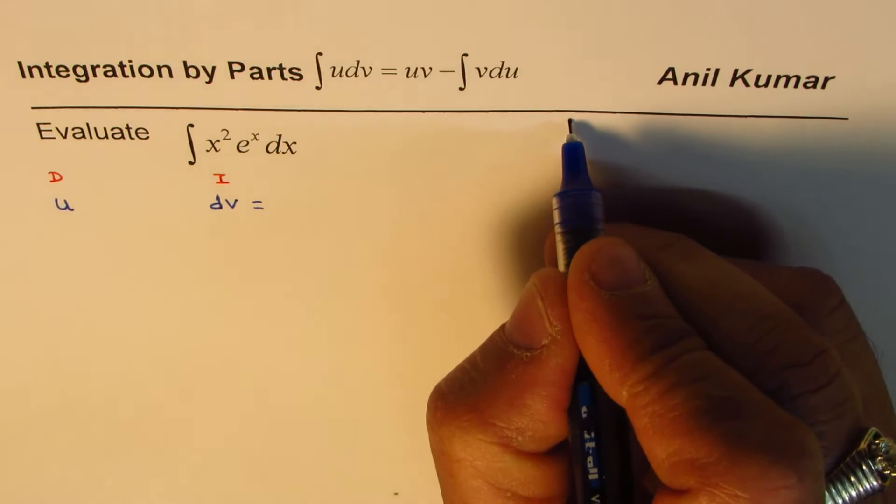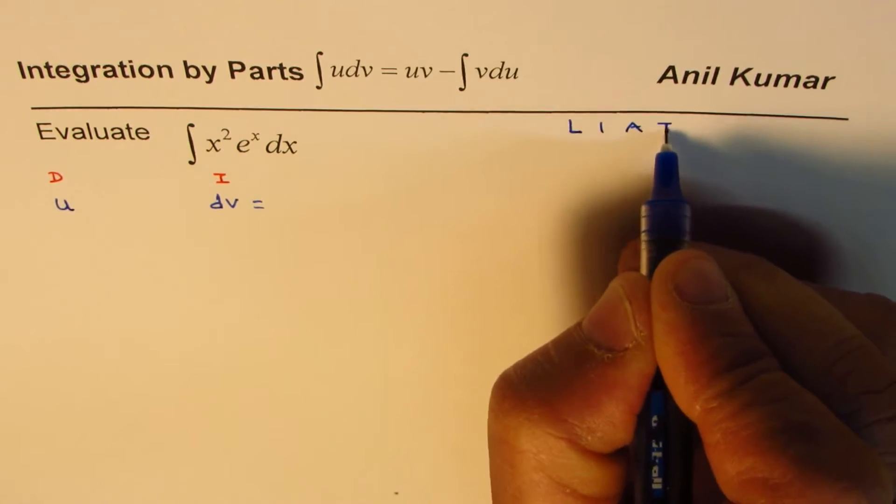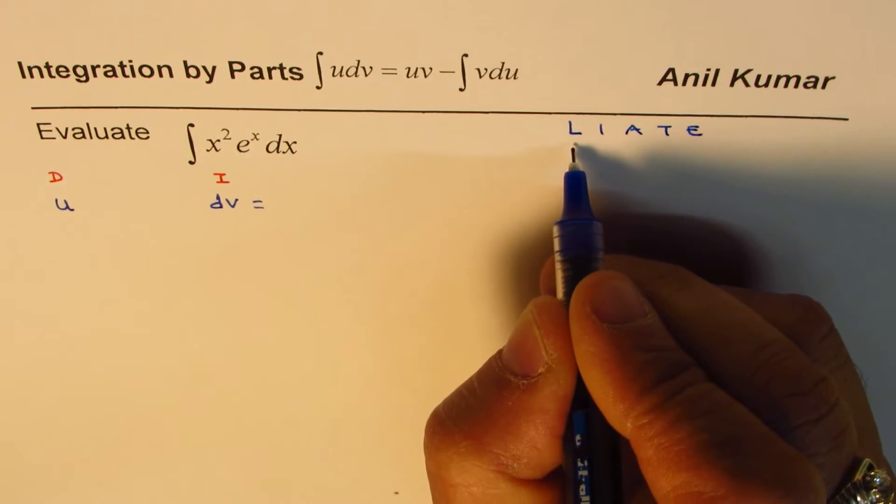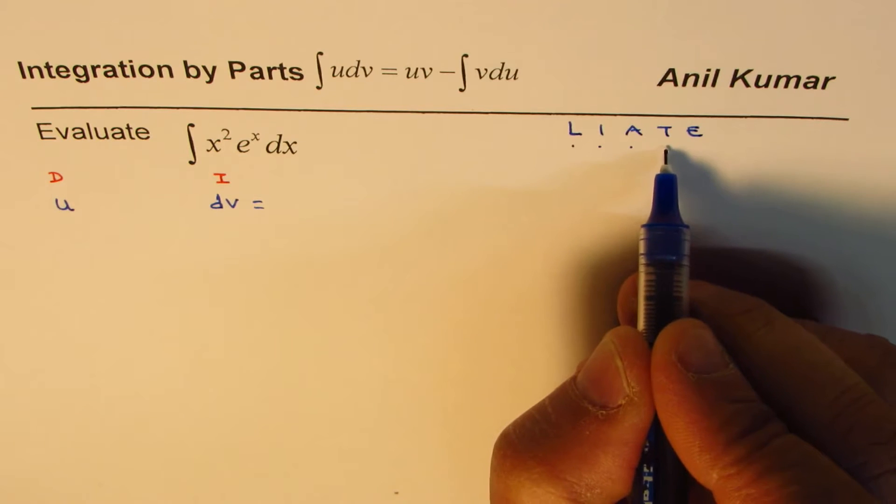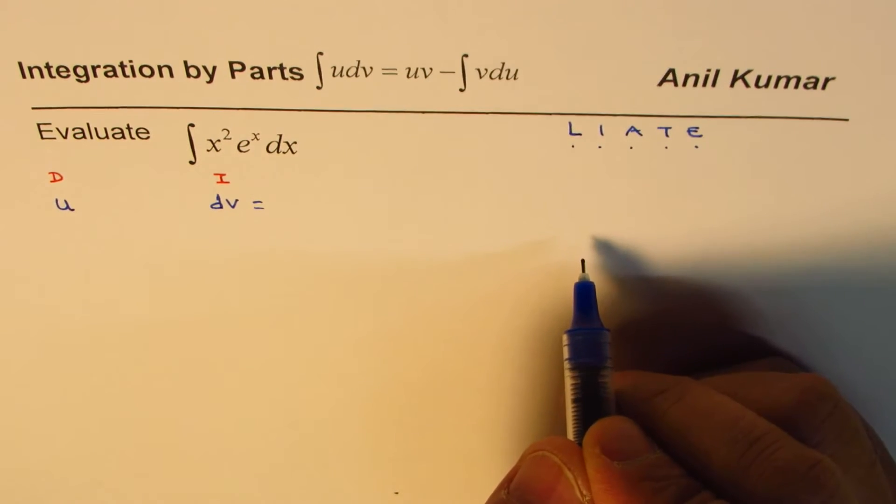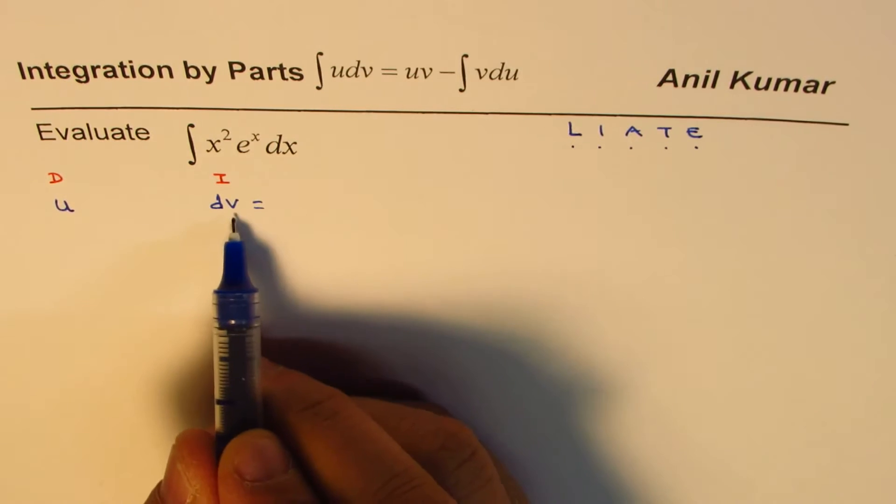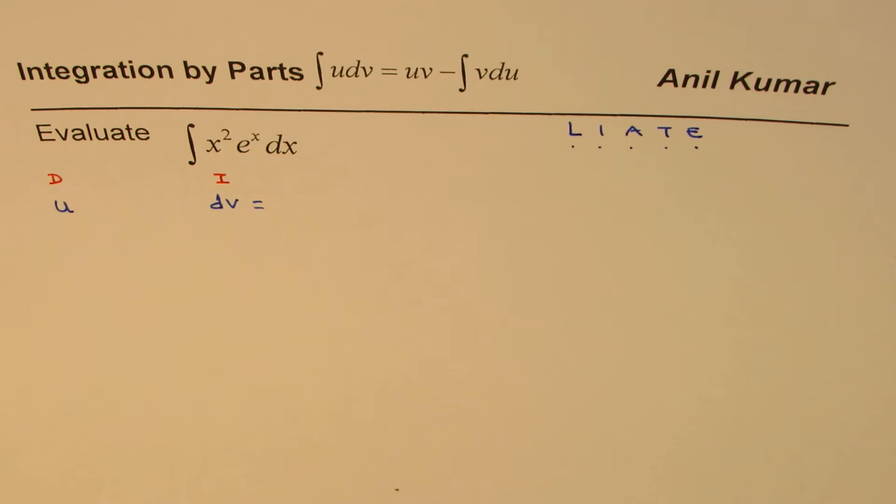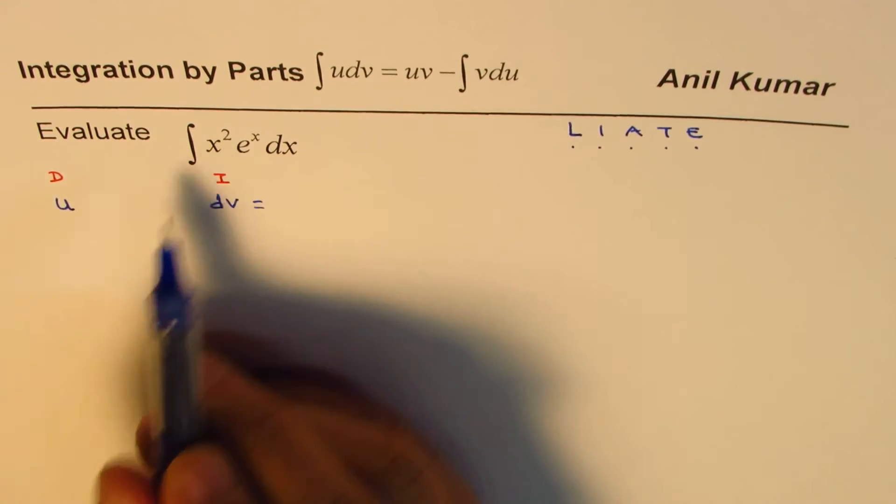We have learned that we could use this acronym which is LIATE, where L is for log, I is inverse functions, A is algebra, T is trigonometric and E is exponential functions. In this case exponential functions will be kept with the integral part. They remain the same and don't really simplify when you find derivative, but this algebraic function will simplify.